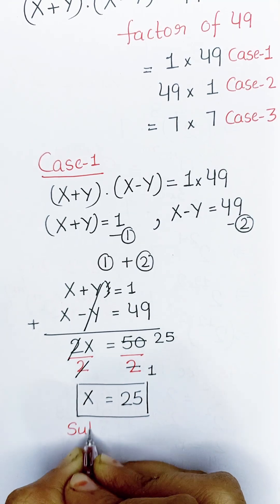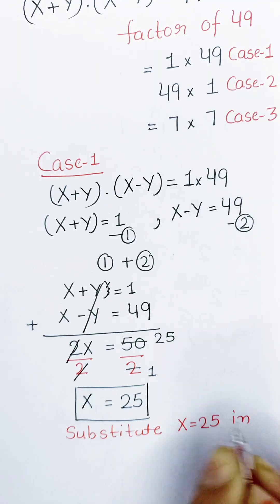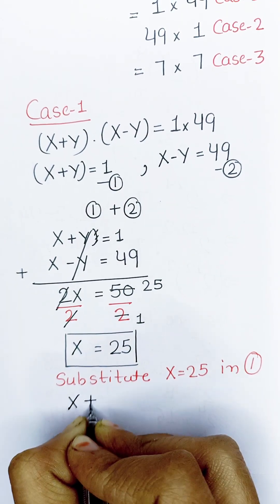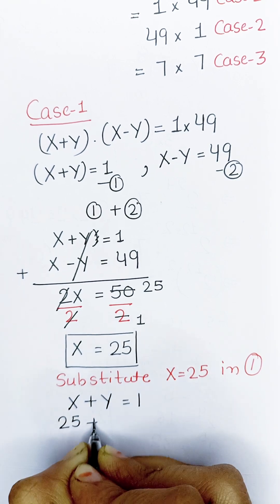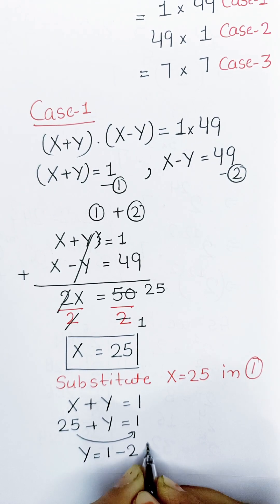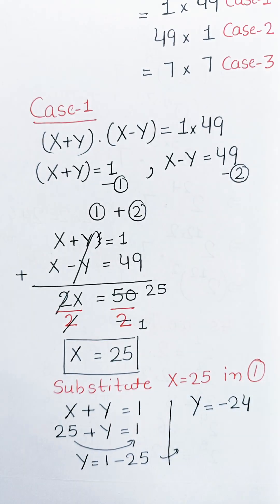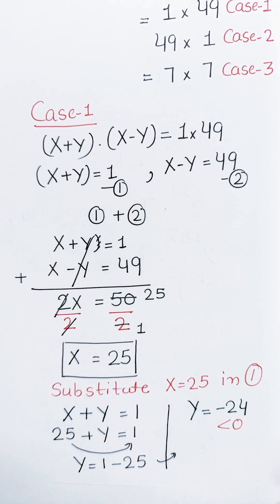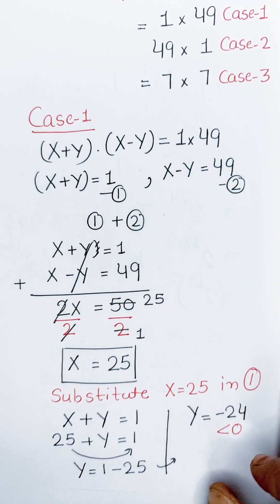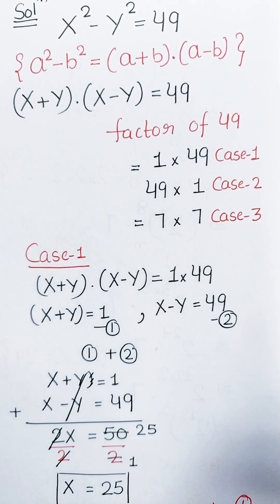Now substitute x equals 25 into equation 1. Equation 1 is x plus y equals 1, so 25 plus y equals 1. Taking 25 to the right: y equals 1 minus 25, which gives y equals negative 24. This is less than 0, but the question requires y to be greater than or equal to 0. So this is not possible — Case 1 is rejected.